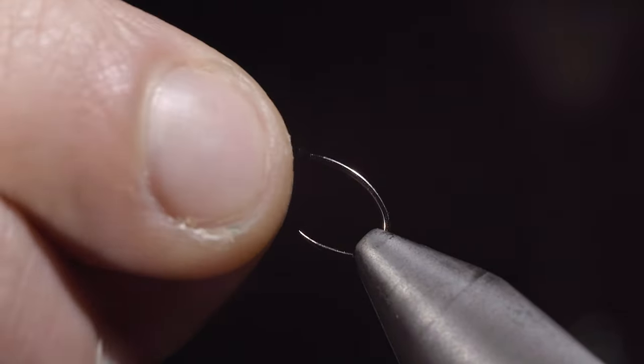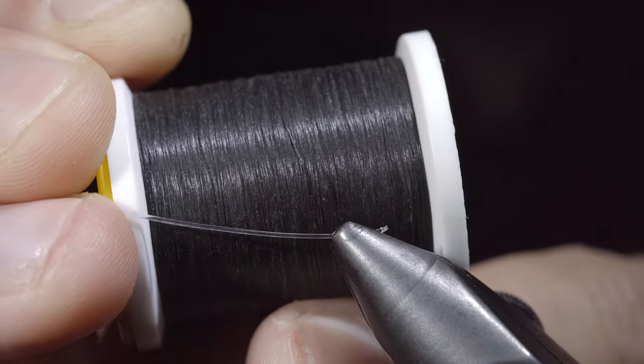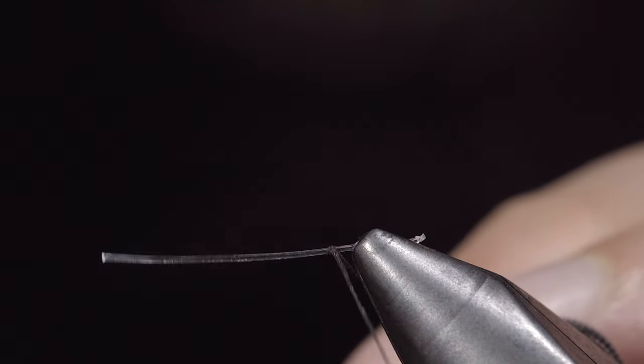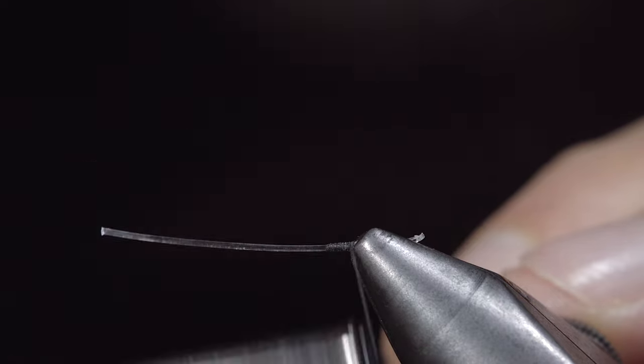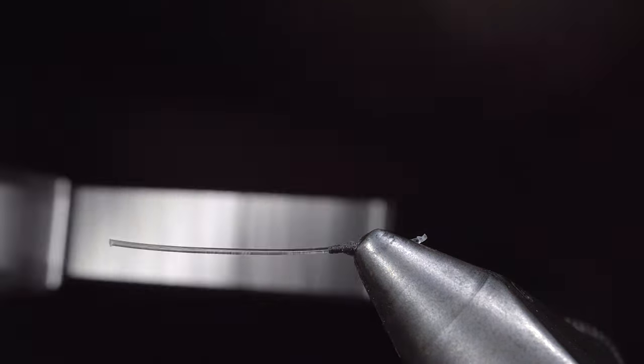With this complete, we'll remove our hook and add a piece of 15 pound monofilament. Here we'll switch our thread out to an ultra thread 140 in black. Secure it carefully to the monofilament, you don't want to use a lot of pressure here or it'll slip off.